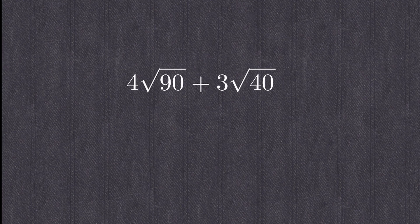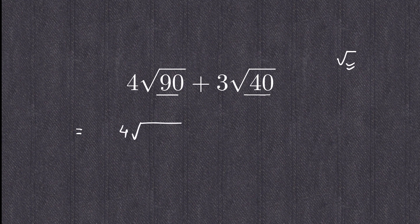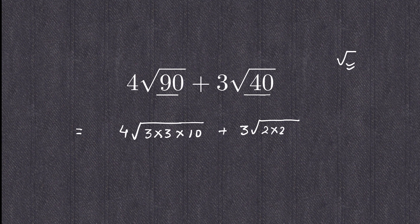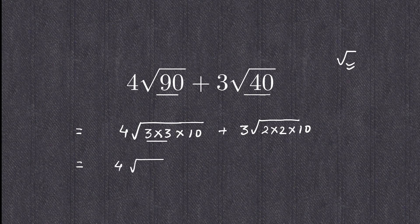We have 4 square root of 90 plus 3 square root of 40. First, let's expand the numbers inside the square root — these are called radicals. So 4√90 can be written as 4√(3 × 3 × 10), and 3√40 can be written as 3√(2 × 2 × 10). Now we can take 3 out of the first square root.